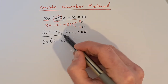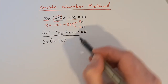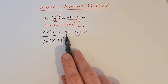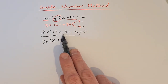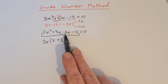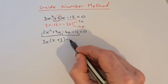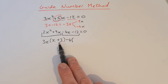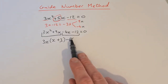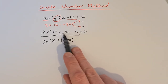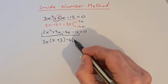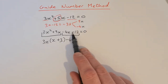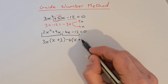Then we look at the second two terms and find the highest common factor. It's going to be 4, but notice that we have two minus signs here, so I'm actually going to take out minus 4. The reason I do that is because I want to get the same thing in both brackets. If I take minus 4 out as a factor of minus 12, I'm left with plus 3.